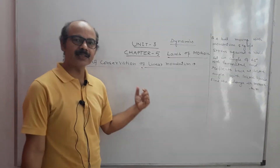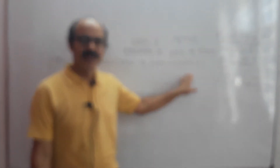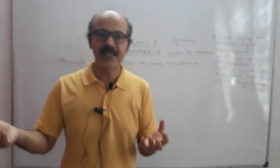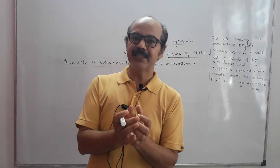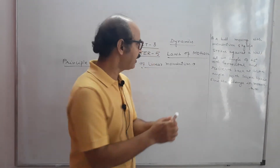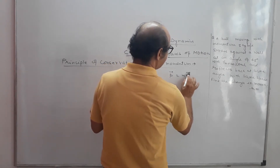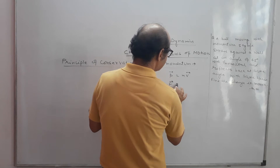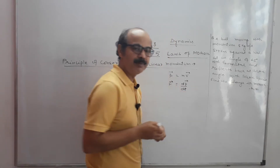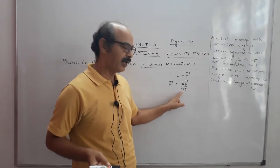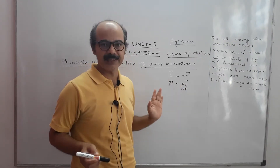So in this class we are going to start the Law of Conservation of Linear Momentum. In the last class I told you what is momentum: momentum P is equal to MV. And force is related to momentum: F is equal to dP by dT. dP is the change in momentum in time interval dT, so the rate of change of momentum is F equal to dP by dT.